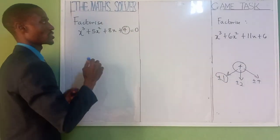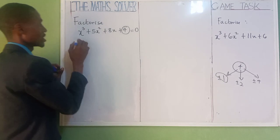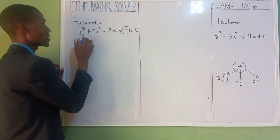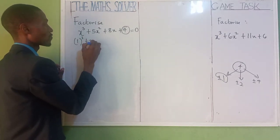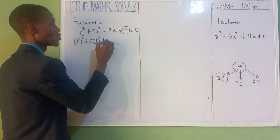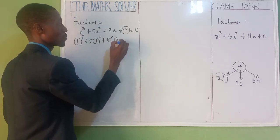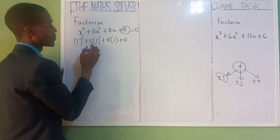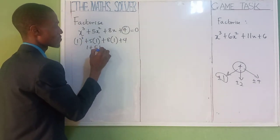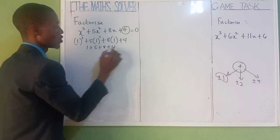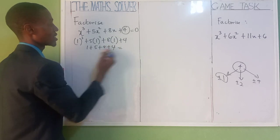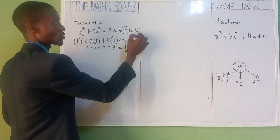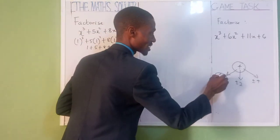Now let's solve this. Let's use plus 1 first. That is: 1 raised to the power of 3, plus 5 into bracket 1 raised to the power of 2, plus 8 into bracket 1 raised to the power of 1, plus 4. This gives 1 plus 5 plus 8 plus 4, which is 18. It's not equal to 0, so plus 1 is out.